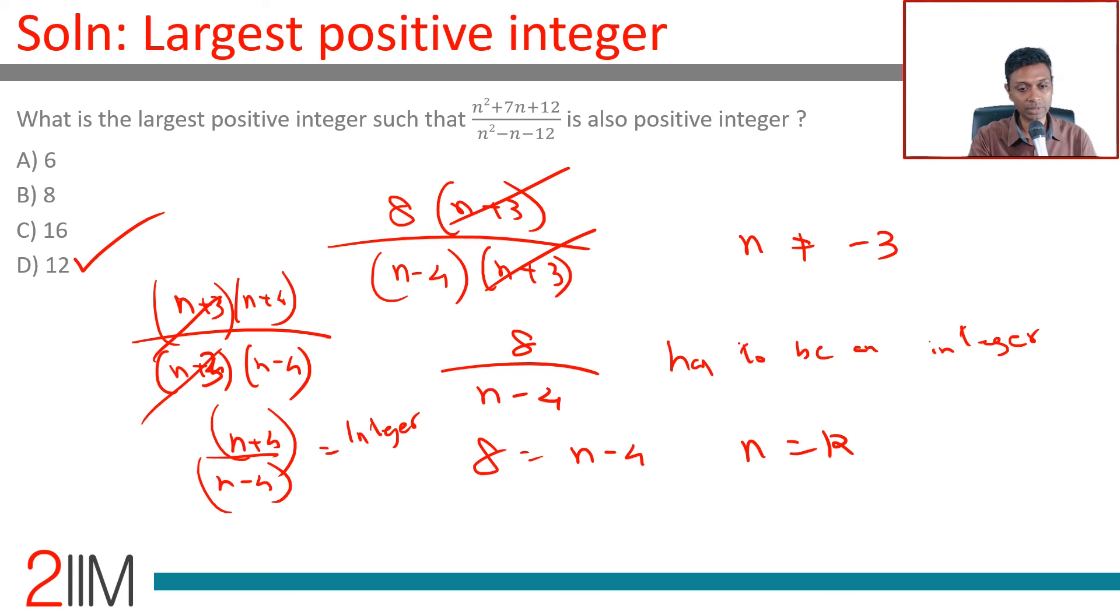What is the maximum value n can take? 12 plus 4 by 12 minus 4 works. 16 by 8 is 2.